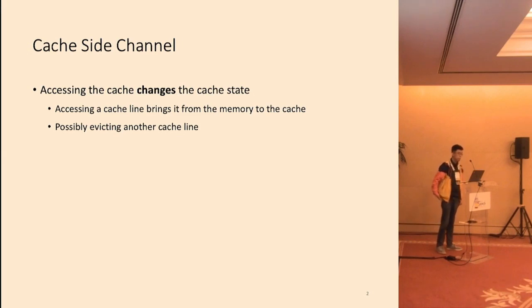First, let me give a quick primer on the cache side channel. There are three facts about the cache that allow an attacker process to steal information from the victim process. First, accessing the cache changes the cache state. When a process accesses data, the corresponding cache line will be brought from the memory to the cache, which could evict another cache line that belongs to another process.